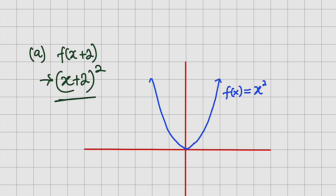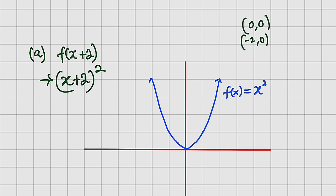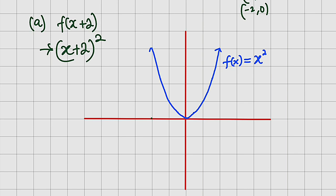We would like to construct the graph of x plus 2 whole squared. Without graphing another function, we can transform this one by simply shifting the graph 2 units to the left. If this value is negative, shift the graph 2 units to the right; if it is positive, shift it to the left. Set x plus 2 equal to 0 — x will be negative 2. So every x coordinate gets negative 2 added to it. The vertex at (0, 0) moves to (negative 2, 0), shifted two units to the left.